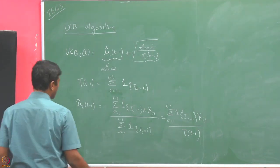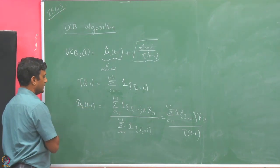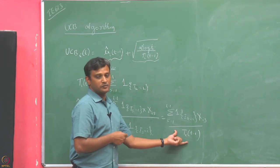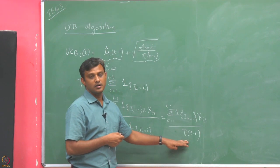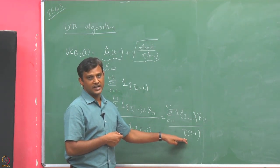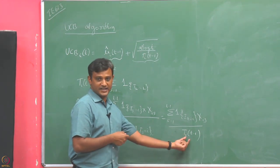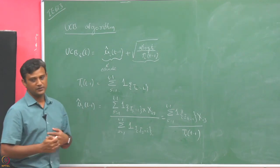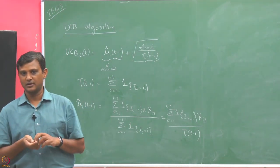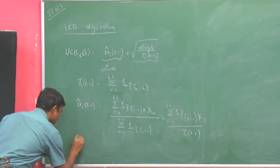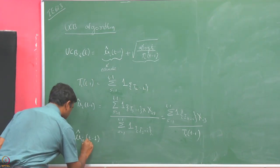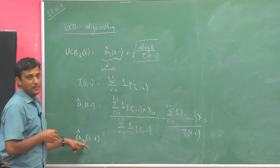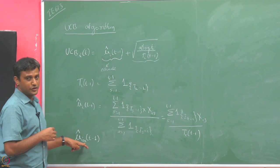Notice that when we write mu-hat_i till time t-1, this is a random quantity based on the t_i(t-1) samples observed till round t-1. A priori, you do not know how many samples of arm i would have been observed till t-1, so t_i(t-1) is itself a random quantity. But if we fix this number — say we have observed exactly u samples — we use a separate notation for that fixed-u estimate.